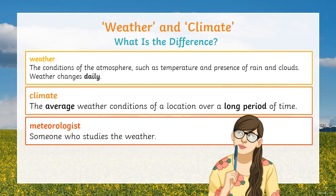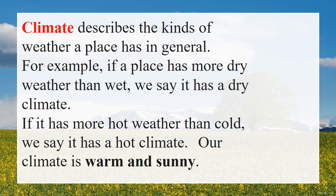A meteorologist is the person who studies the weather. Climate describes the kind of weather a place has in general. For example, if a place has more dry weather than wet, we say it has a dry climate. If it has more hot weather than cold, we say it has a hot climate. Our climate in the Bahamas is warm and sunny.